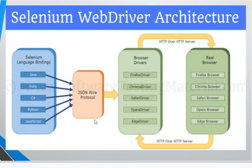When we execute our automation script, internally the client libraries use the JSON Wire Protocol. Whatever commands we provide through the client libraries, the JSON Wire Protocol will encode or decode them, and then communicate with the different types of browser drivers.